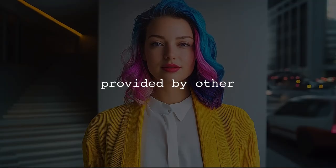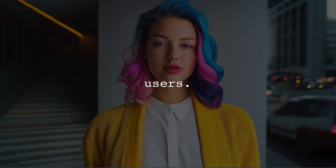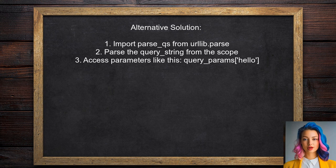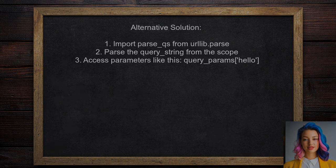Now let's look at answers provided by other users. An alternative approach to accessing query parameters in Django Channels involves using the urllib.parse module. First, you can parse the query string from the scope dictionary, which will give you a dictionary of query parameters.